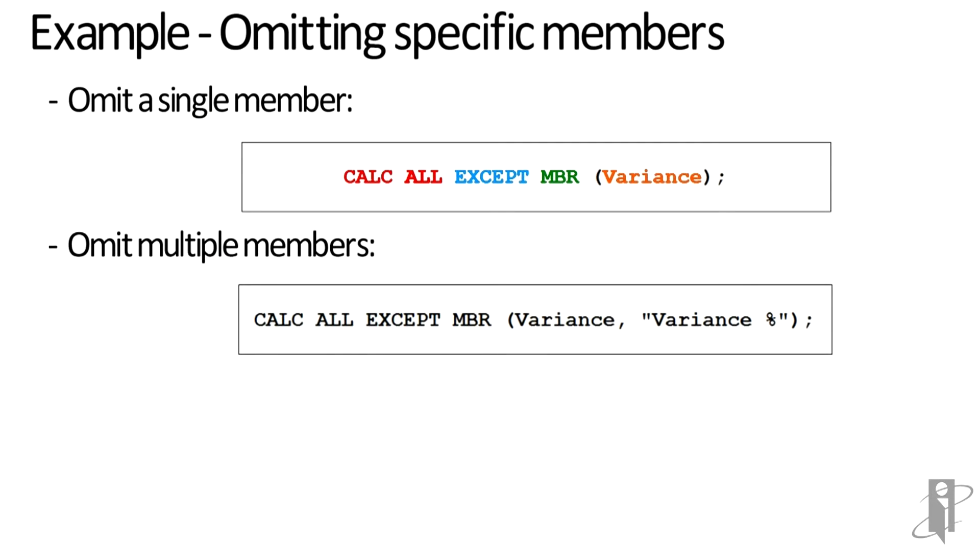Or maybe I also stored variance percentage. I could say CALC ALL EXCEPT MBR variance comma variance percentage and it's going to do all the members except variance and variance percentage.